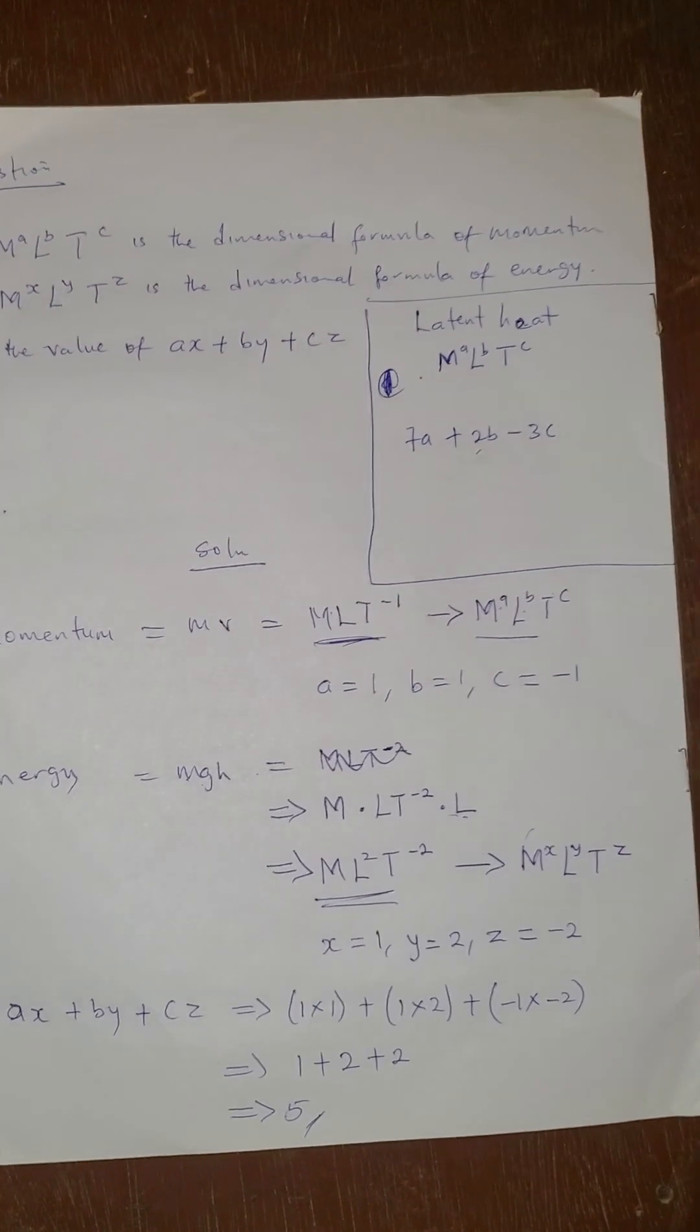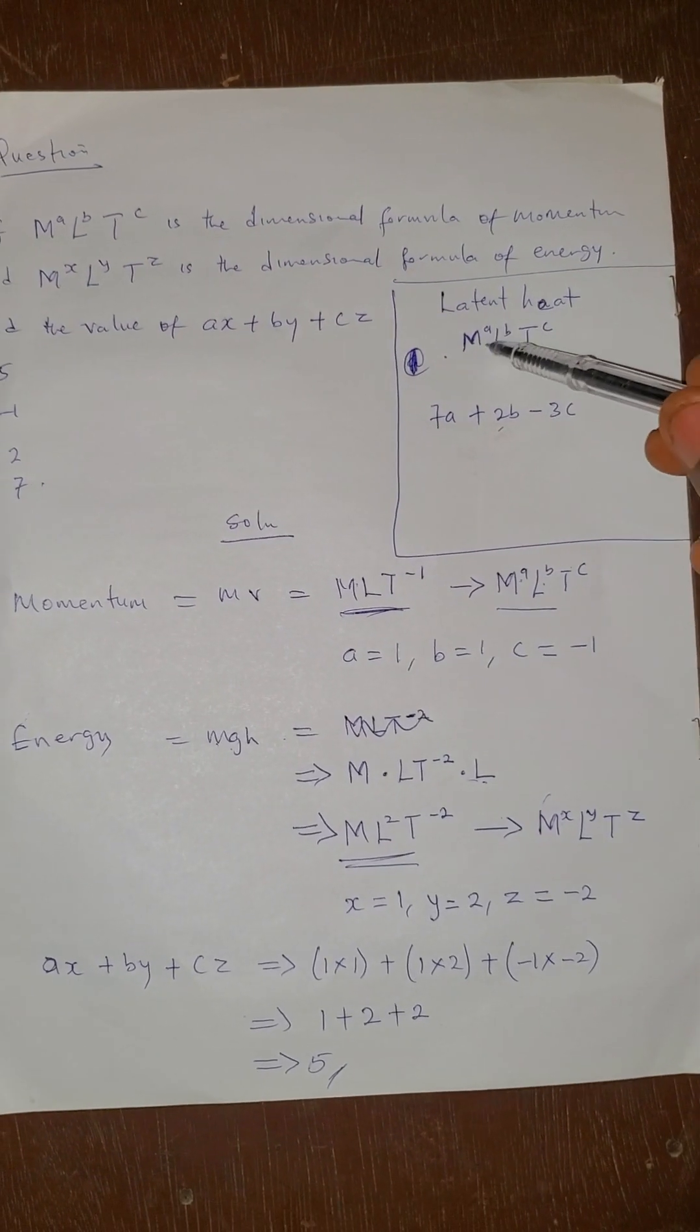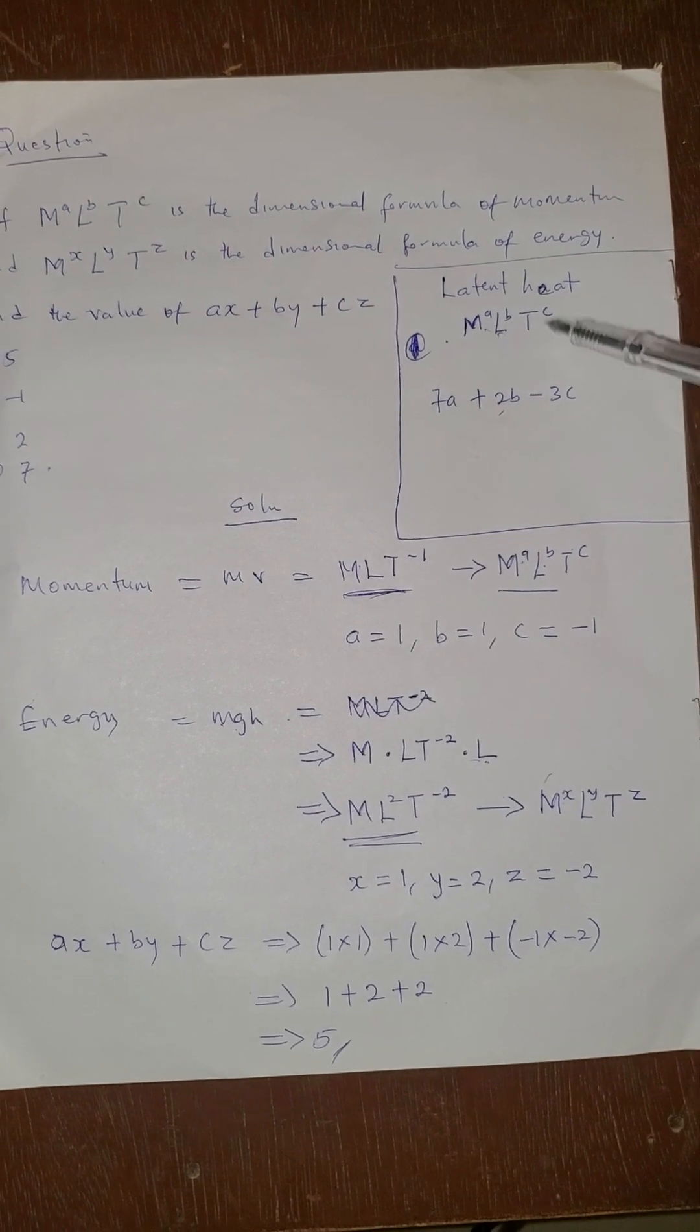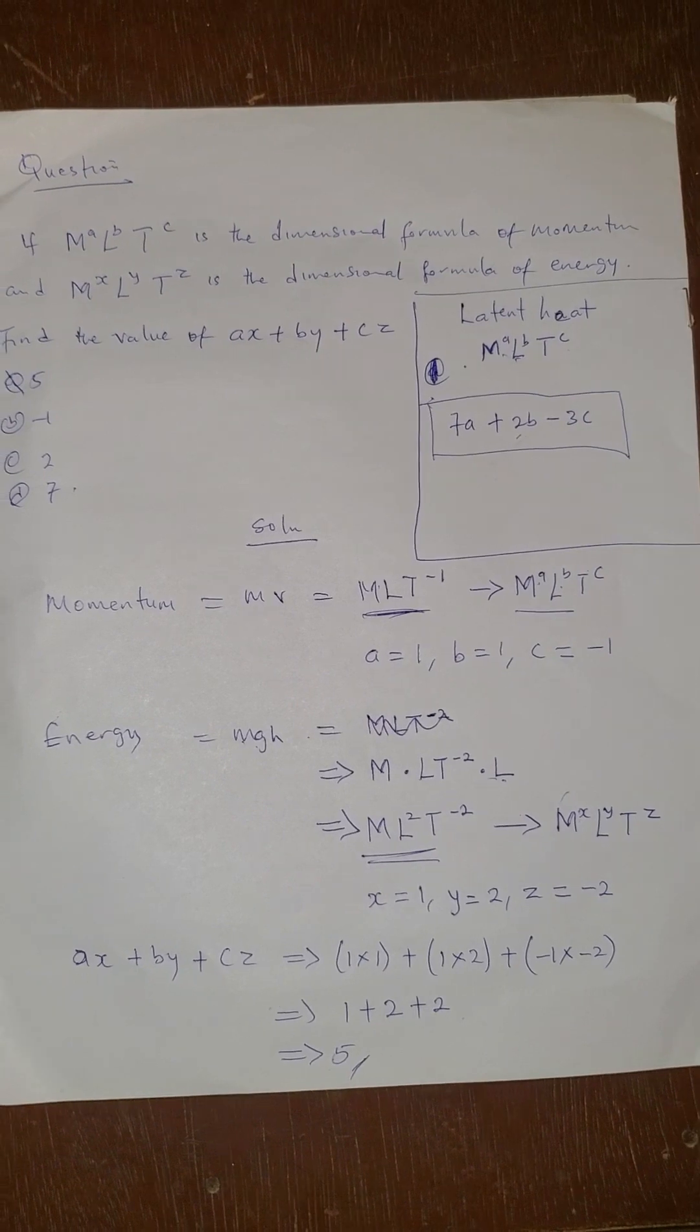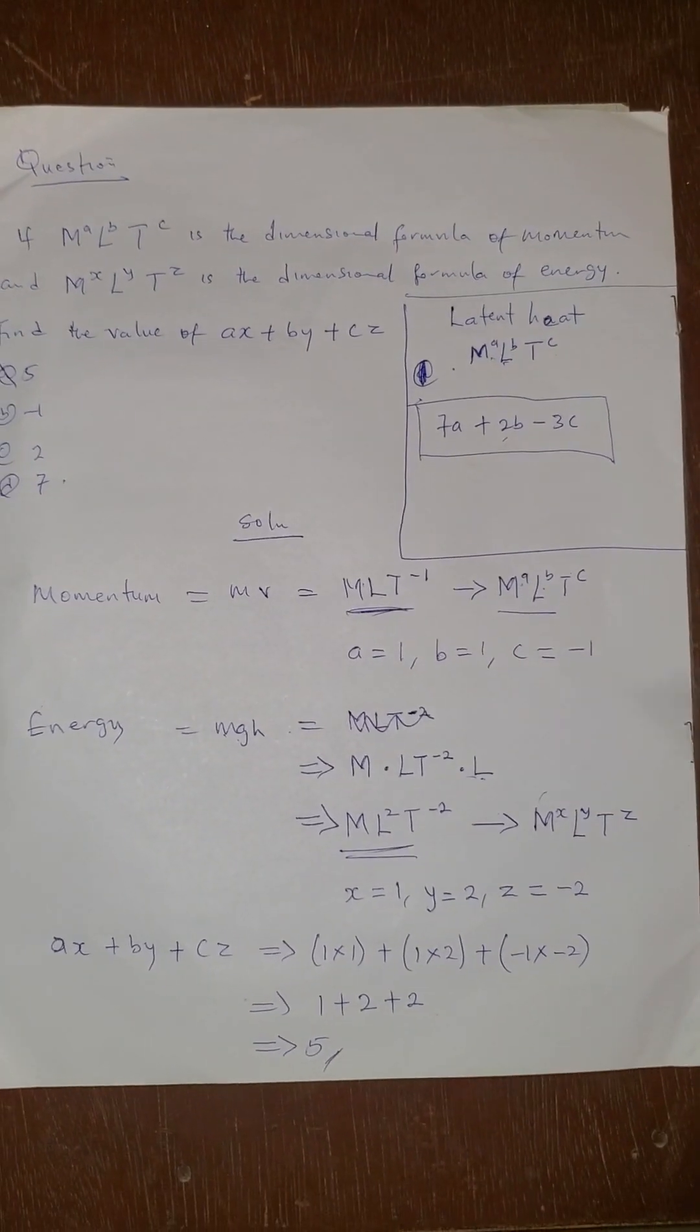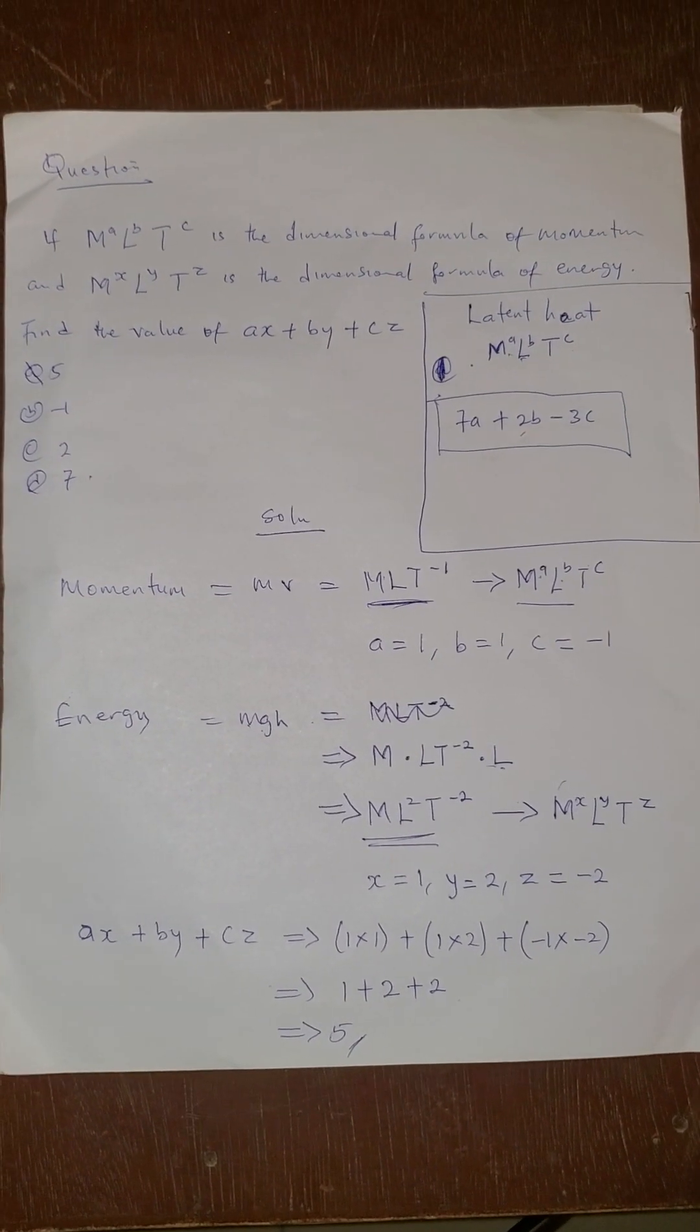If the dimension of latent heat is M raised by a, L raised by b, T raised by c, what is the value of 7a plus 2b minus 3c? Let me have this answer at the comment section. God bless you. Thank you.